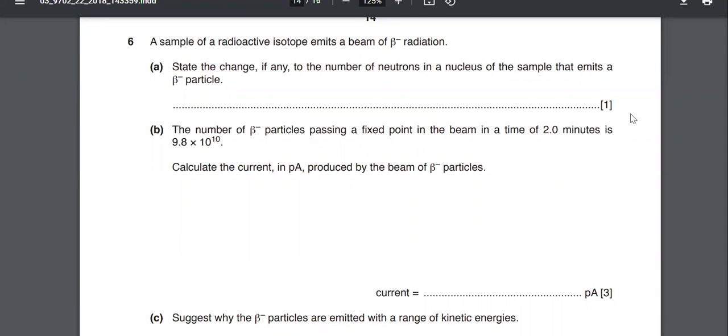All right, welcome. In this work example, we're taking a look at a sample of a radioactive isotope emitting a beam of beta minus radiation. The first one says state the change, if any, to the number of neutrons in a nucleus of the sample that emits a beta minus particle.